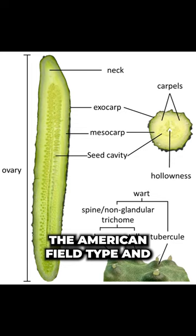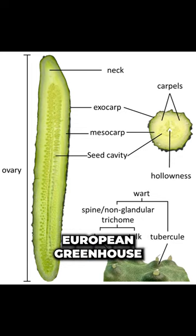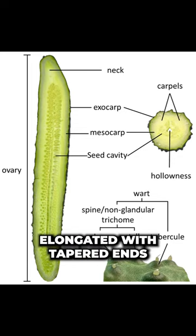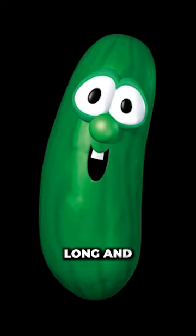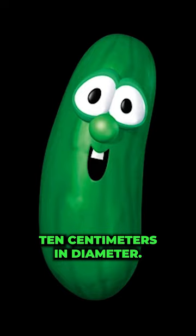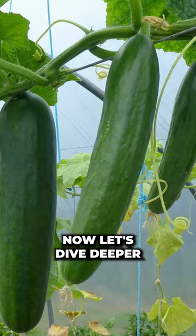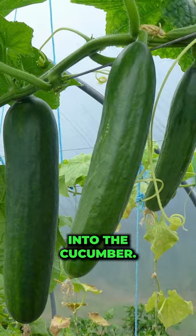The fruit of both the American field type and European greenhouse type is roughly cylindrical, elongated, with tapered ends, and may be as large as 60 cm long and 10 cm in diameter. Now let's dive deeper into the cucumber.